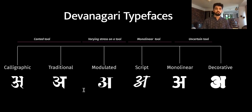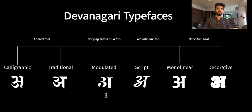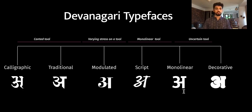The seven categories are: calligraphic, which may be a revival or a personal style; traditional, which is a derivation of calligraphic typefaces but with much more rationalized proportions used for text; modulated typefaces, which are often used with Latin serif typefaces; script typefaces, which try to mimic handwriting or are much more free-flowing; monolinear typefaces, used with Latin sans-serif typefaces; and decorative typefaces.